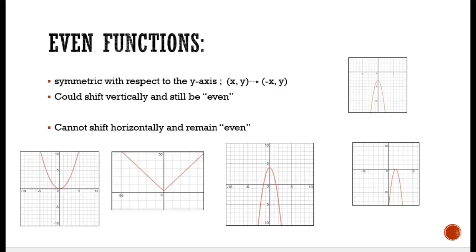An even function means that a graph is symmetric with respect to the y-axis — the vertical axis. If you can fold on the vertical axis and they reflect one another, like they look the same — think of a butterfly — then it is considered an even function. For an x-y coordinate, for it to be an even function, the reflection of that is also true on that line, wherever the line is going.